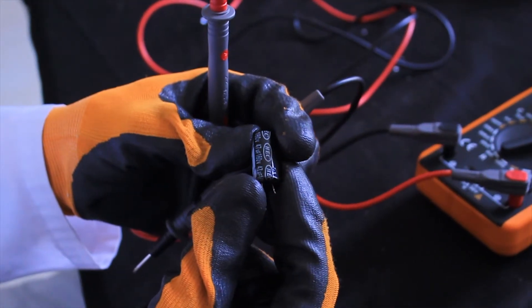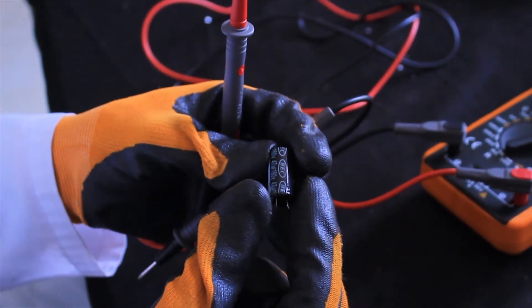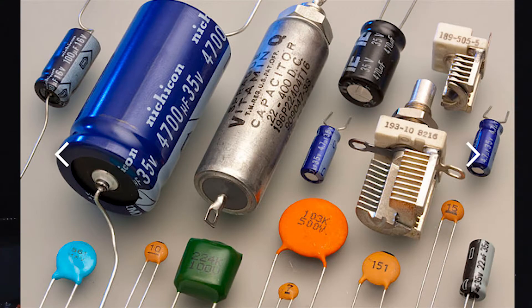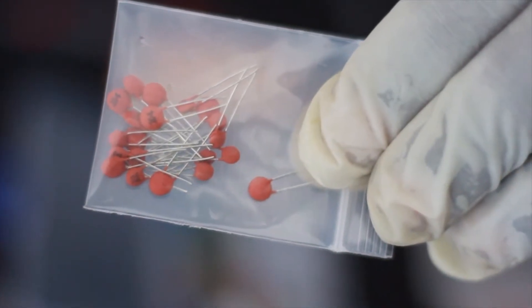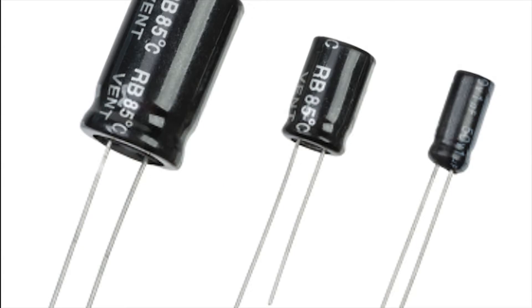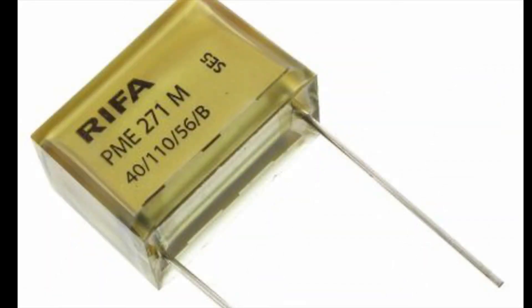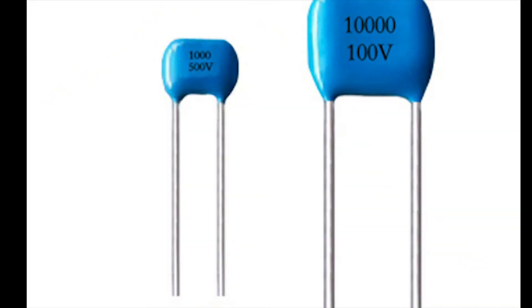A capacitor is a two-terminal passive component that has two parallel plates separated by an insulator, and is used to temporarily store energy in the form of an electrical charge. Types of capacitors include ceramic capacitor, electrolytic capacitor — which is mostly used in electronic circuits — paper capacitor, mica capacitor, and so on.